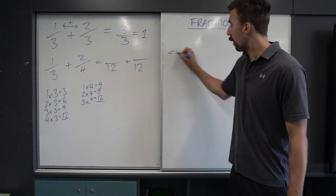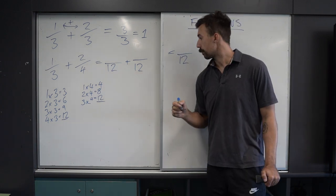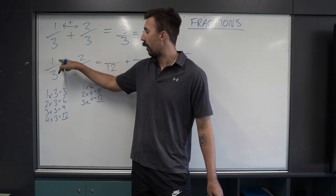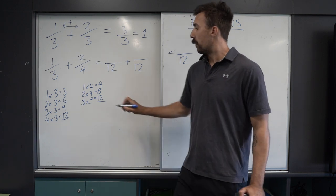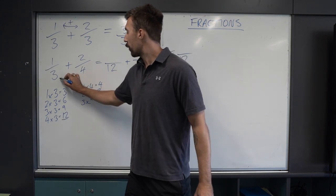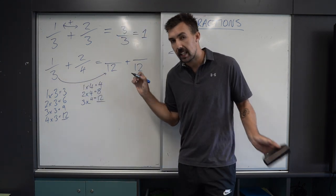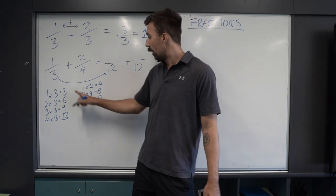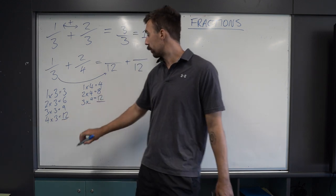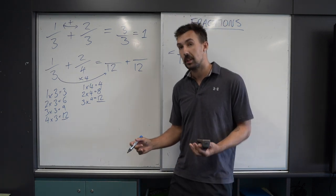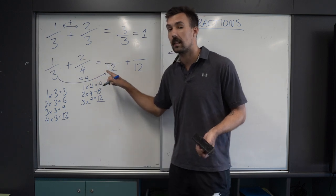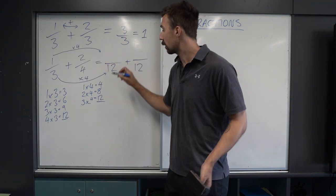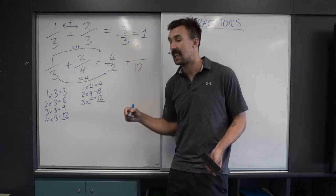We know it's going to equal 12 as the denominator, but we can't just add 1 plus 2 because we've scaled up both fractions. We need to scale the numerators up too. 3 times something equals 12 — the magic number is 4. So 3 times 4 equals 12. With fractions and ratios, we do the same thing to the top as we did to the bottom. So 1 multiplied by 4 is 4. Therefore, 4 over 12 is the same as 1 over 3.